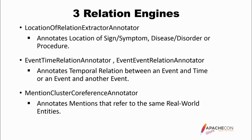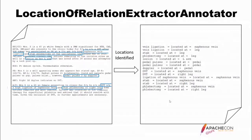Here are some examples from the location of relation extractor annotator. On the left is document text, with locations in blue boxes — obvious to us but needing to be assembled for a computer. On the right we can see: vein ligation located at the saphenous vein; phlebectomy located at the leg; DVT located at the saphenous vein and the right leg. These are useful things to have.